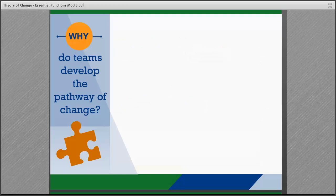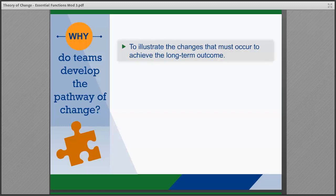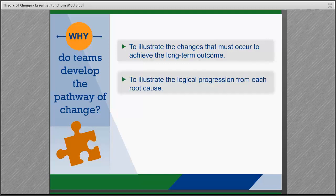Developing the pathway of change with causal links is critical to the Theory of Change and the change implementation process. It is the roadmap that will guide the agency through the changes they are seeking. The pathway of change shows the team the changes that must unfold to get to the desired outcome, and illustrates a logical progression from the root cause of the problem identified through each step in the pathway to the long-term outcome.